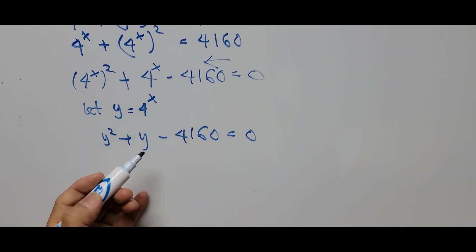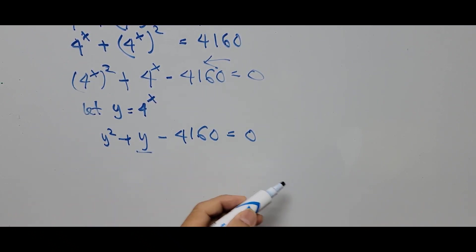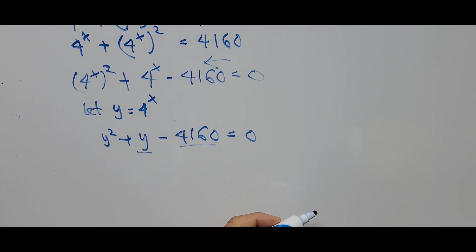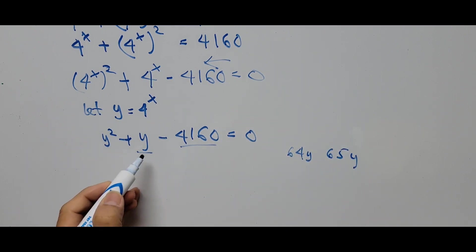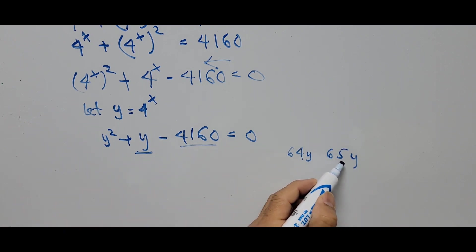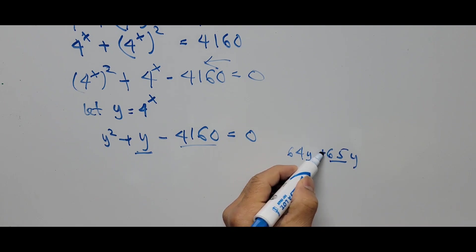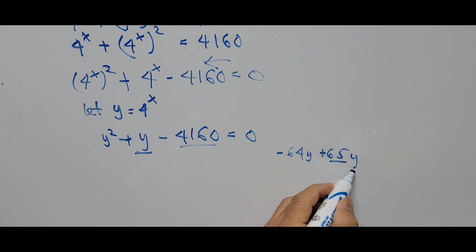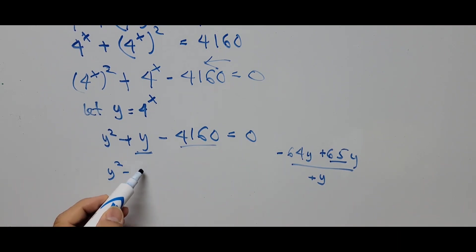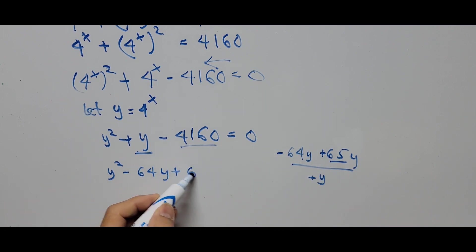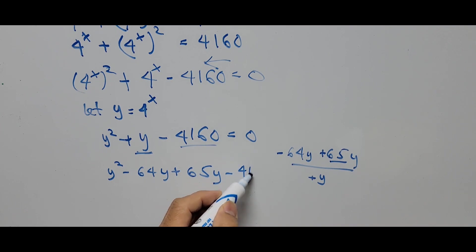If you notice, the middle term is positive y, and we're replacing this by finding factors of 4160 — that is 64 and 65. So there will be −64y and +65y, since 65 − 64 = 1, giving us the positive y middle term. The equation now becomes y squared minus 64y plus 65y minus 4160 equals 0.